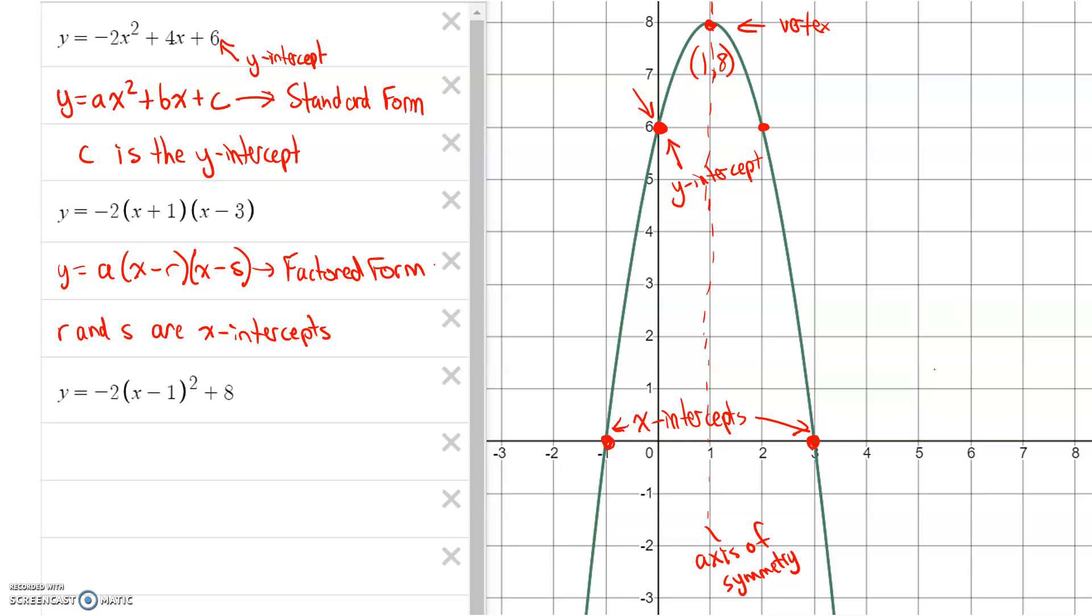The last equation that we have here is y = -2(x - 1)² + 8. Well, we haven't really seen things like that except for expanding previously. And so what I want us to connect here is this vertex, this vertex of 1, 8. Hopefully you see it in the equation here.